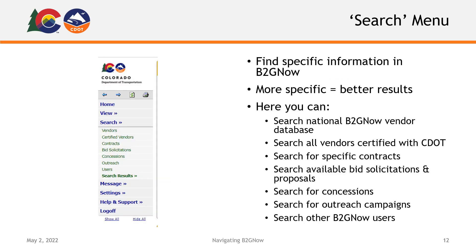Your Search menu lets you find specific information in the B2GNOW system. Just like other search engines, the more specific your search can be, the better. You can search using information such as a business or DBA name, a user or contact's name, or even a city or keyword. Here, you can search the national B2GNOW database of vendors, search all vendors currently certified with CDOT, search for a specific contract, search available bid solicitations and proposals, search for concessions, search for any outreach campaigns, or search for other B2GNOW users.